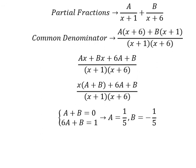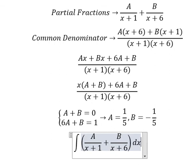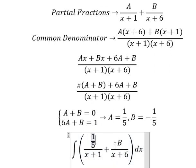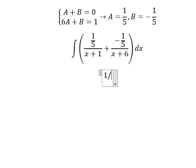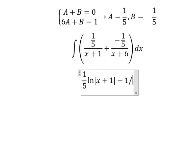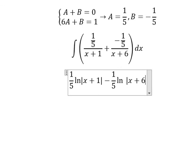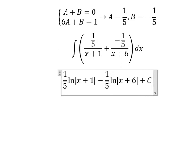And now we got the final answer. A equals to 1 over 5, B equals to negative 1 over 5. The integration of this one, we will have 1 over 5 ln of the absolute value of x plus 1. Similar for this one, we have negative 1 over 5 ln of the absolute value of x plus 6. And we add C. This is the end. Thank you for watching.